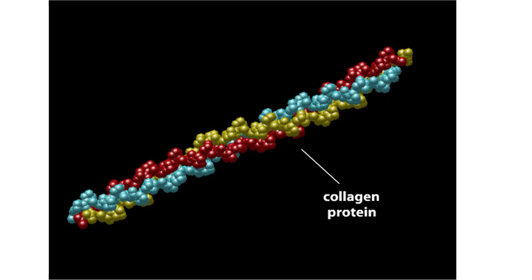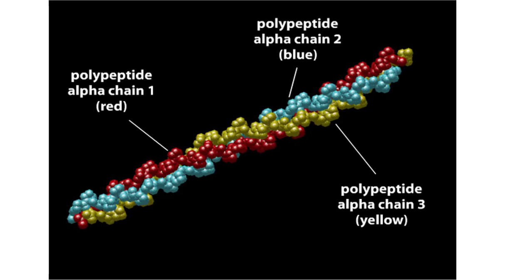Collagen is the most abundant mammalian protein. It's the main component of skin, bones, and teeth. This protein is composed of three helical polypeptide chains that form a stiff, super-coiled cable. The type of helix in each polypeptide is unique to collagen and results from collagen's unusual amino acid composition.